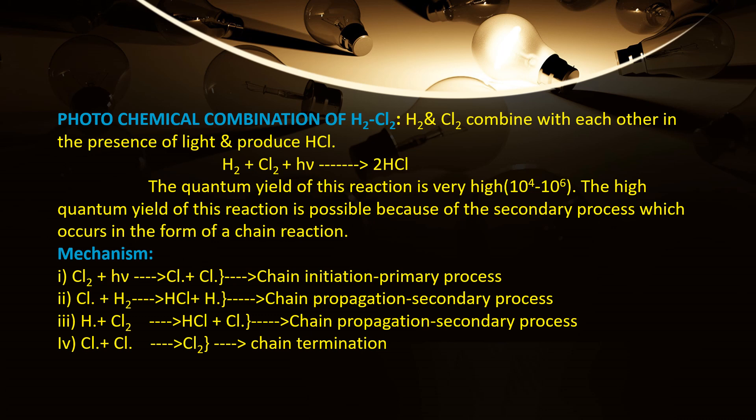Look at the mechanism of this reaction. Step one is the primary process. In the primary process, each reactant molecule absorbs one quantum of radiation and dissociates into two free radicals. Here, the chlorine molecule absorbs one quantum of light radiation and dissociates into highly energetic chlorine free radicals. This step can also be named chain initiation.